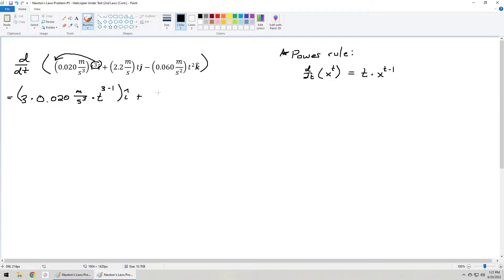So with this first term, this exponent would be dropped out in front, so we have 3 times 0.020 meter per second cubed times t to the 3, and we're subtracting 1. And that is all encapsulated in the i-hat direction.